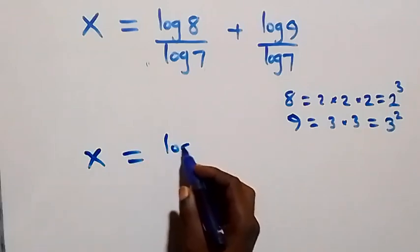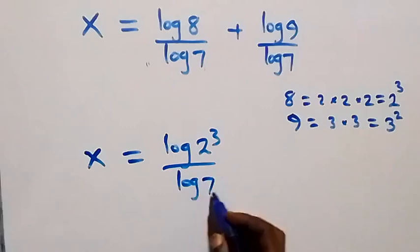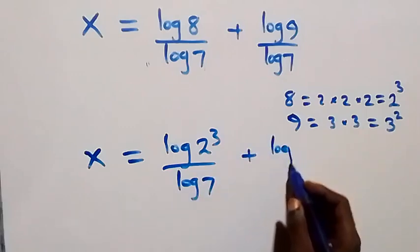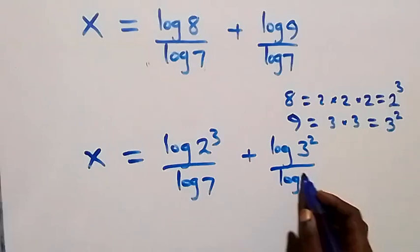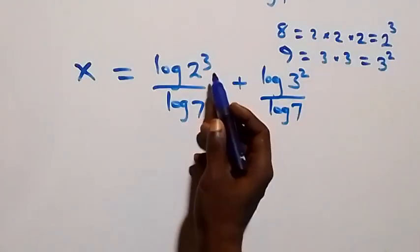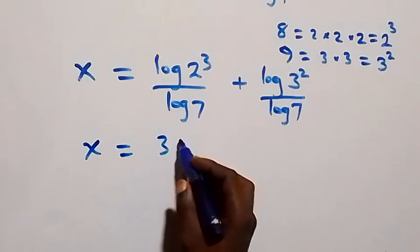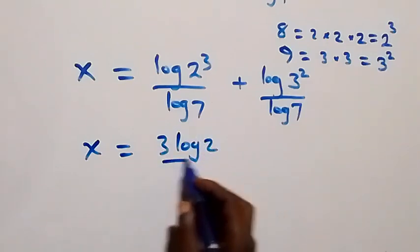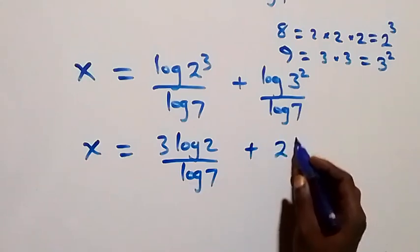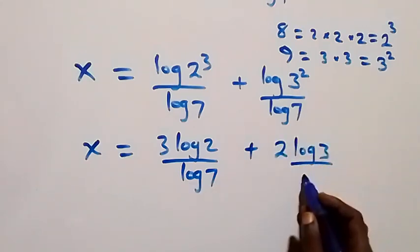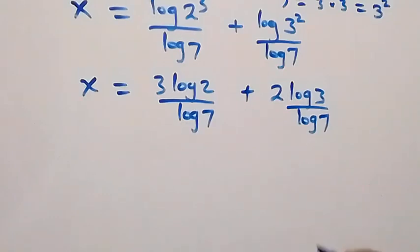So the equation becomes x equals to log(2 raised to power 3) over log 7 plus log(3 squared) over log 7. Applying the power law, the exponents come down: x equals to 3 log 2 over log 7 plus 2 log 3 over log 7.